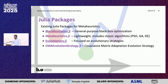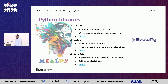In Julia, we have some packages like BlackBoxOptim, which is a general-purpose black-box optimizer. We have Metaheuristics.jl, which is lightweight and includes some classical state-of-the-art algorithms like particle swarm optimization, genetic algorithm, and differential evolution. We have Evolutionary.jl, which focuses on evolutionary strategies like DE, and also CMAEvolutionStrategy.jl (CMAES). On the Python side, we have a package called MEALPY — metaheuristic algorithms in Python — which contains more than 200 algorithms, is modular, has an easy API, and is widely used for benchmarking new optimizers. There is also EvoloPy and SciPy optimizer.